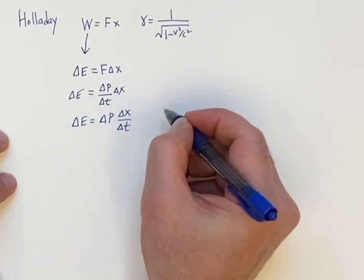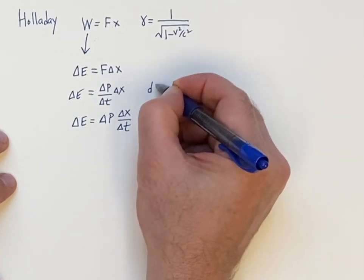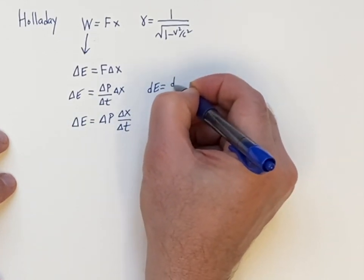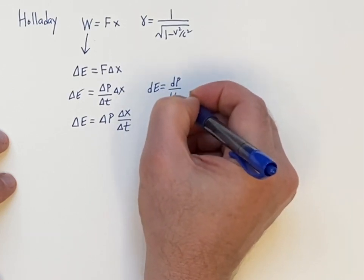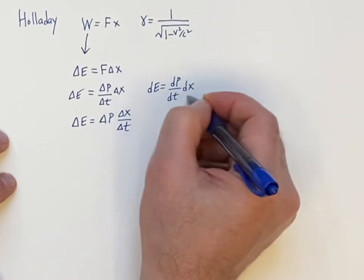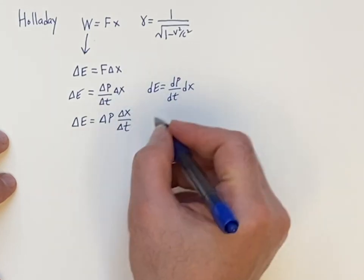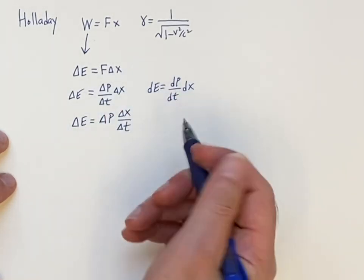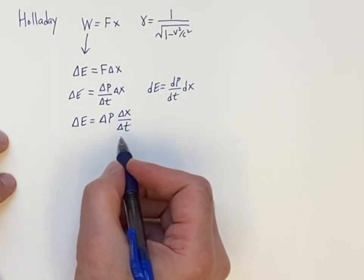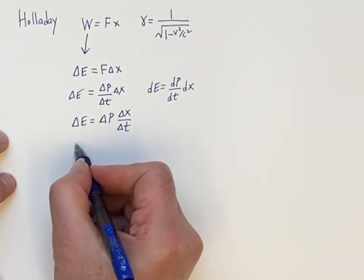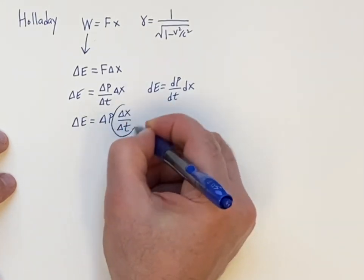Mathematicians get nervous if you have the form, for example, dE is dP over dT dX, and then you start moving infinitesimals around. So here, this is okay to do it this way. And then what we have is the velocity.